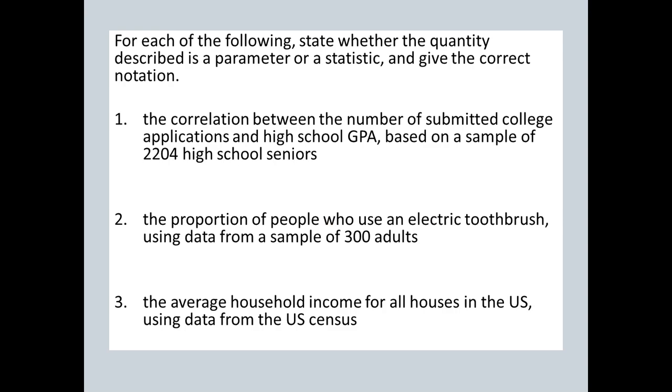For each of those examples, what we want to do is figure out if the quantity being described is a population measure or a sample measure, and then give the correct notation. That first one is correlation, and I just said don't worry about correlation, but I think that first one is worth going through just to be able to tell if that's a sample measure or a population measure, so if it's a statistic or a parameter.